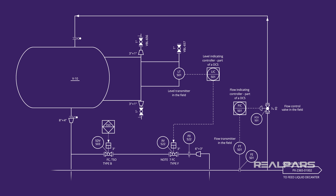Let's look at a P&ID with DCS symbols and see how it links field instruments with the DCS and how it's displayed on the operator HMI. LT501 and FT501 are two field instruments, both sending electrical signals to DCS controllers.